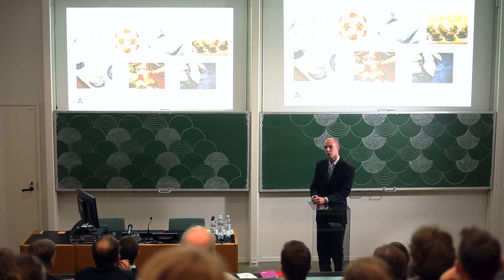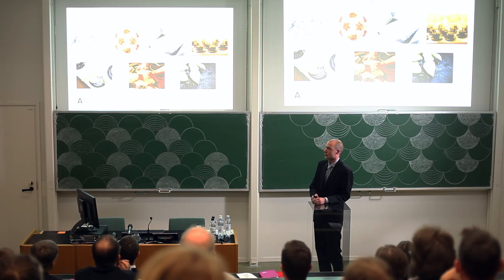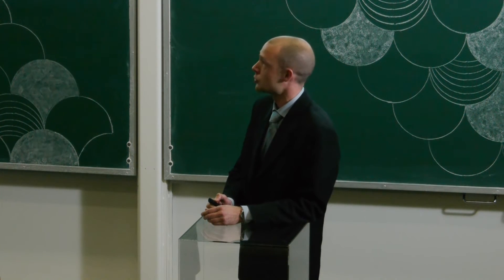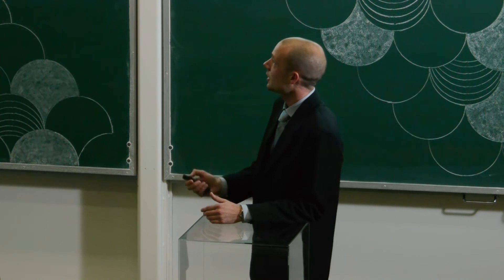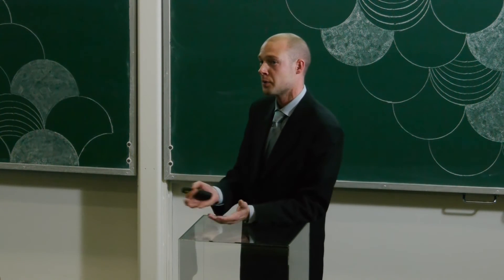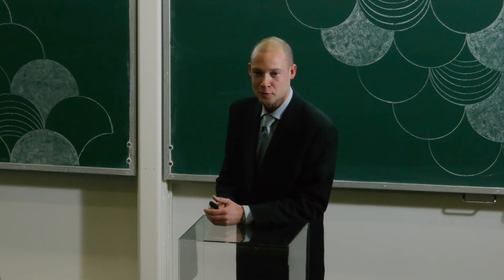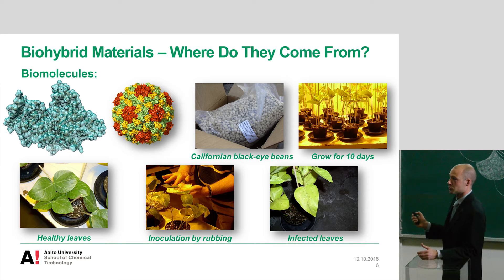And for example, the virus particles that we are researching, these can actually be made or cultured in laboratory. So what you should do if you want to make a batch of virus particles, then you need to go to the supermarket and buy a bag of beans. For example, black eye beans, these are available from the local supermarket. And then these can be grown. So you pot them, you let them grow and plant the lumps, and then you get healthy plants.